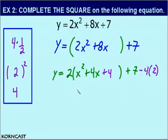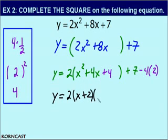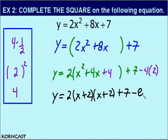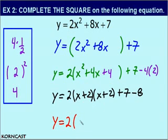Now step 4 means we need to factor this perfect square trinomial and simplify. We get 2 times — x squared plus 4x plus 4 factors to x plus 2 times x plus 2. Then we add 7, and negative 4 times 2 is negative 8. Finally, we rewrite x plus 2 times x plus 2 as x plus 2 squared. So our final equation is y equals 2 times quantity x plus 2 squared, and 7 minus 8 is negative 1.